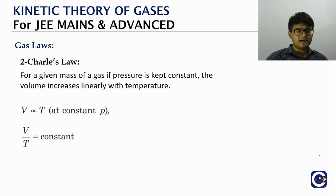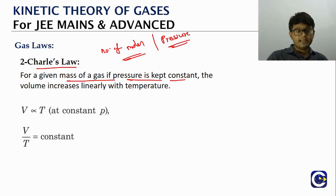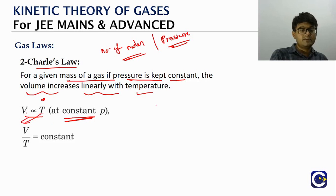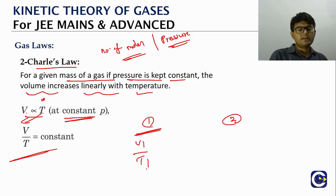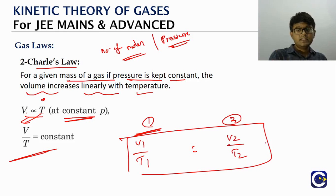The second gas law is Charles' law. For a given mass of gas (number of moles fixed) at constant pressure, volume is directly proportional to absolute temperature: V ∝ T. Rearranging: V/T = constant, so for two states V₁/T₁ = V₂/T₂. Importantly, temperature must be on the Kelvin (absolute) scale.